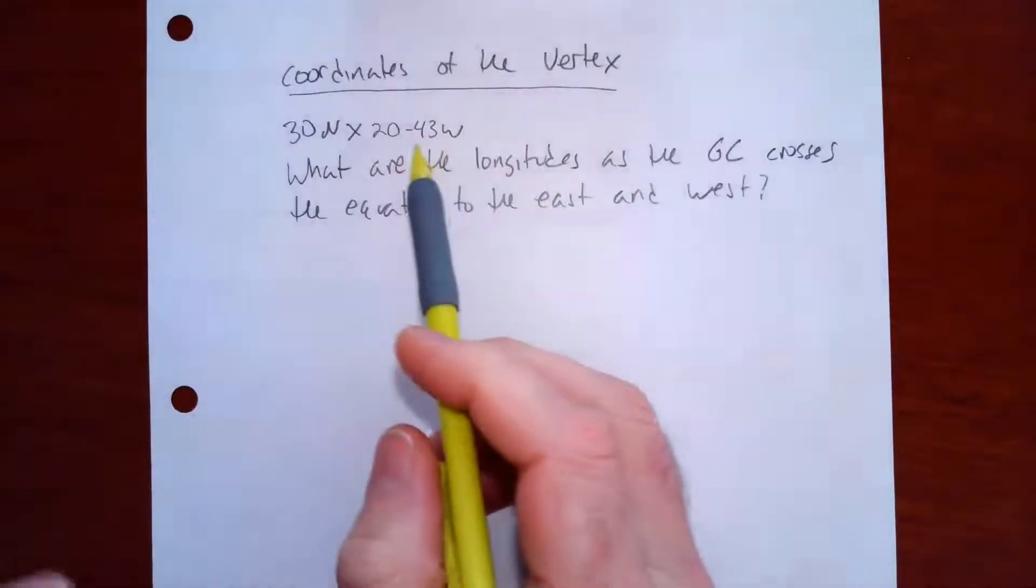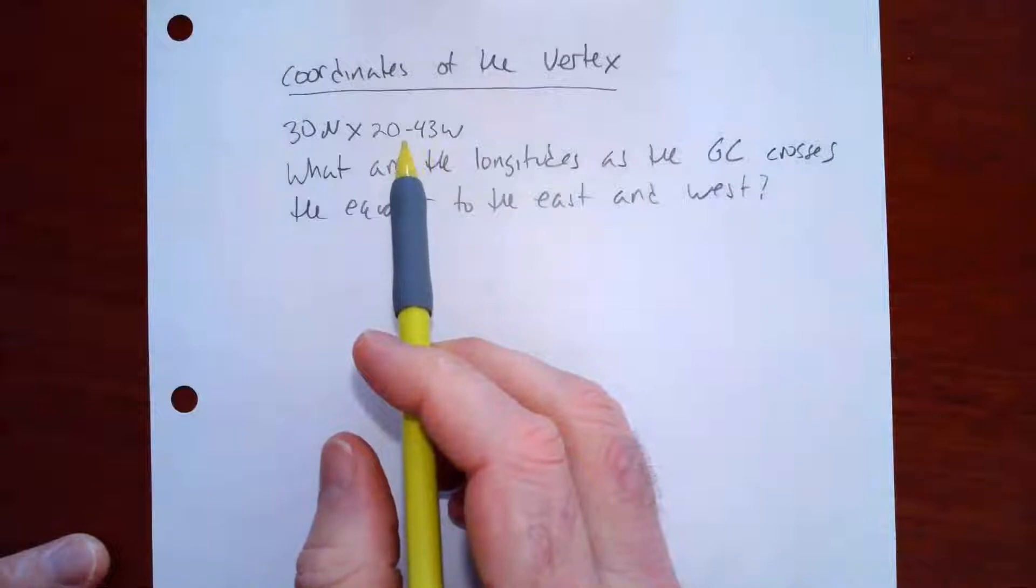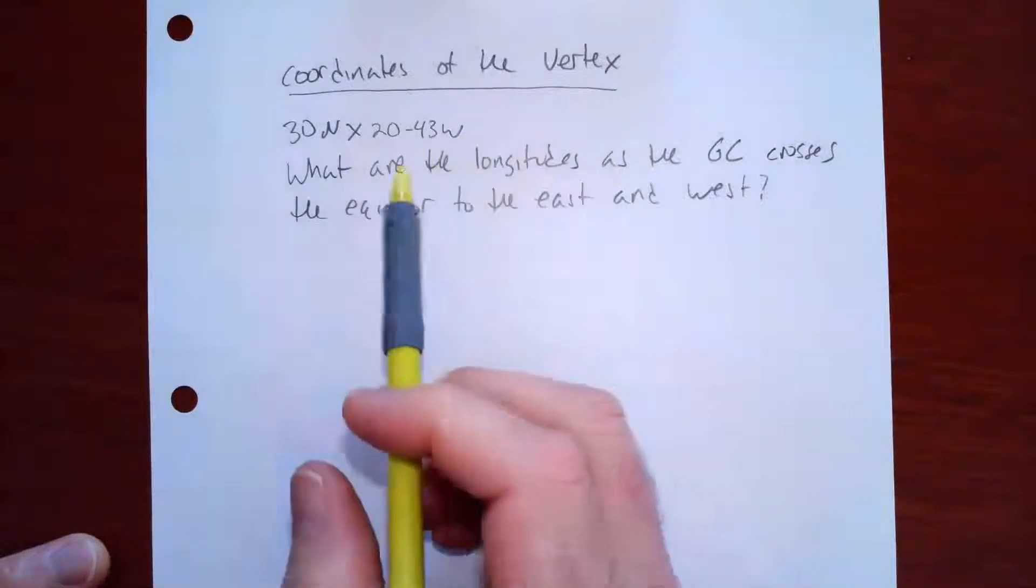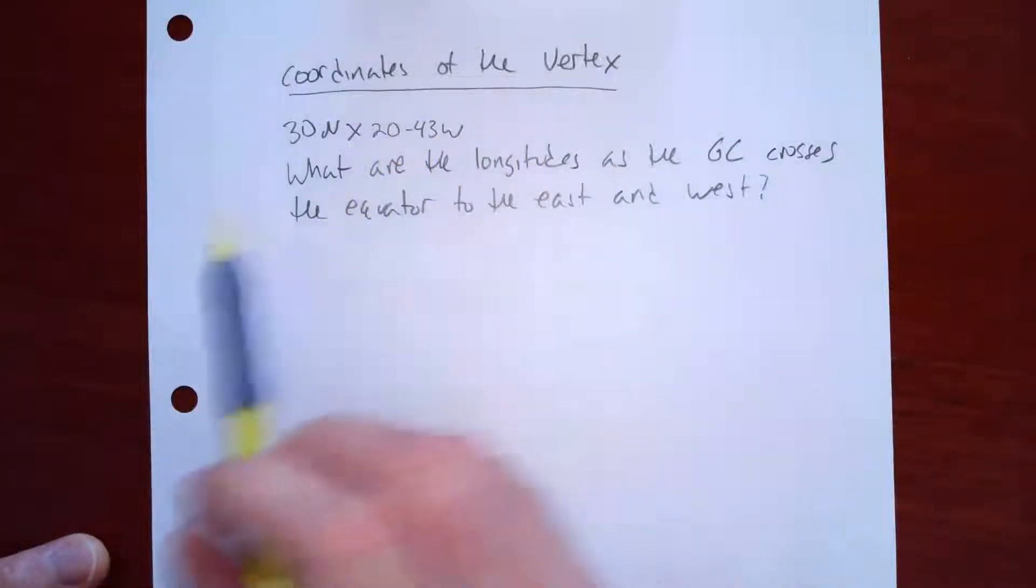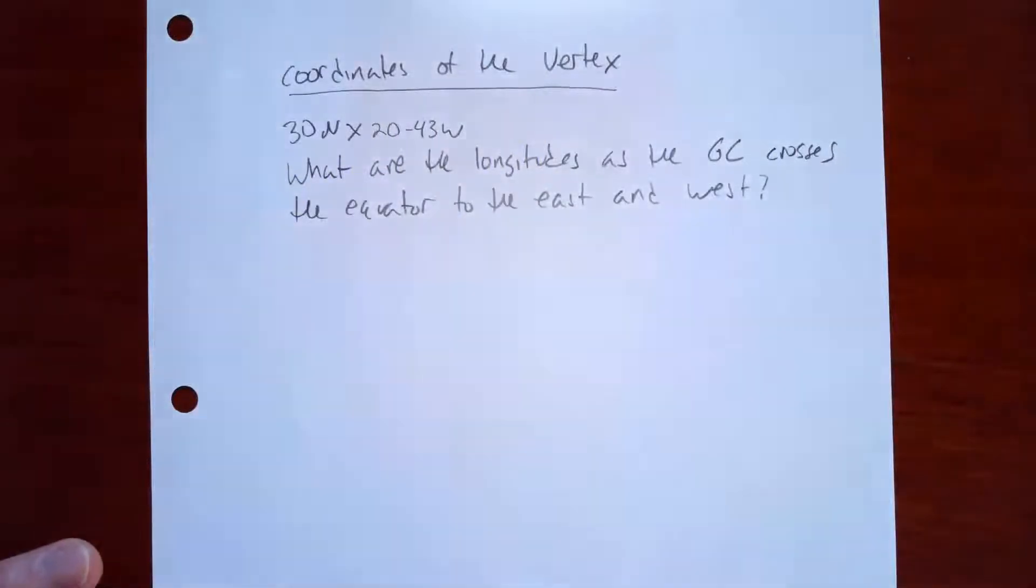All right, in this video, I'm going to give you the coordinates of a vertex, and I'm going to show you how you can calculate what the longitudes will be as that great circle crosses the equator to the east on either side, to the east and the west of that vertex.